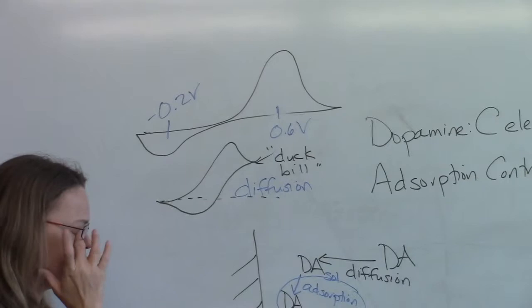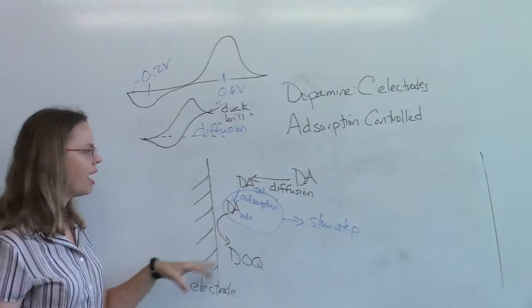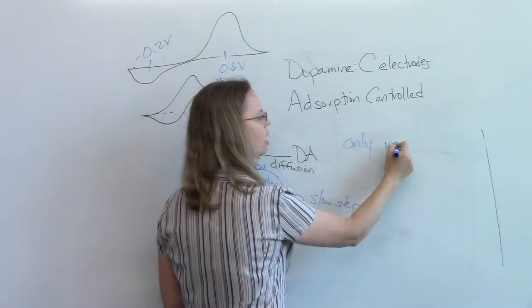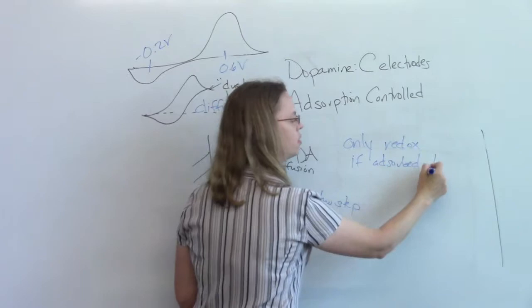And so for adsorption control, it's a little bit of a different process. So we have to think about it as something being stuck to the electrode. And we're going to only do our redox if it's adsorbed to the electrode. And we're going super fast, like this up and back, I don't think I've given the timeline, only takes about 10 milliseconds for this.